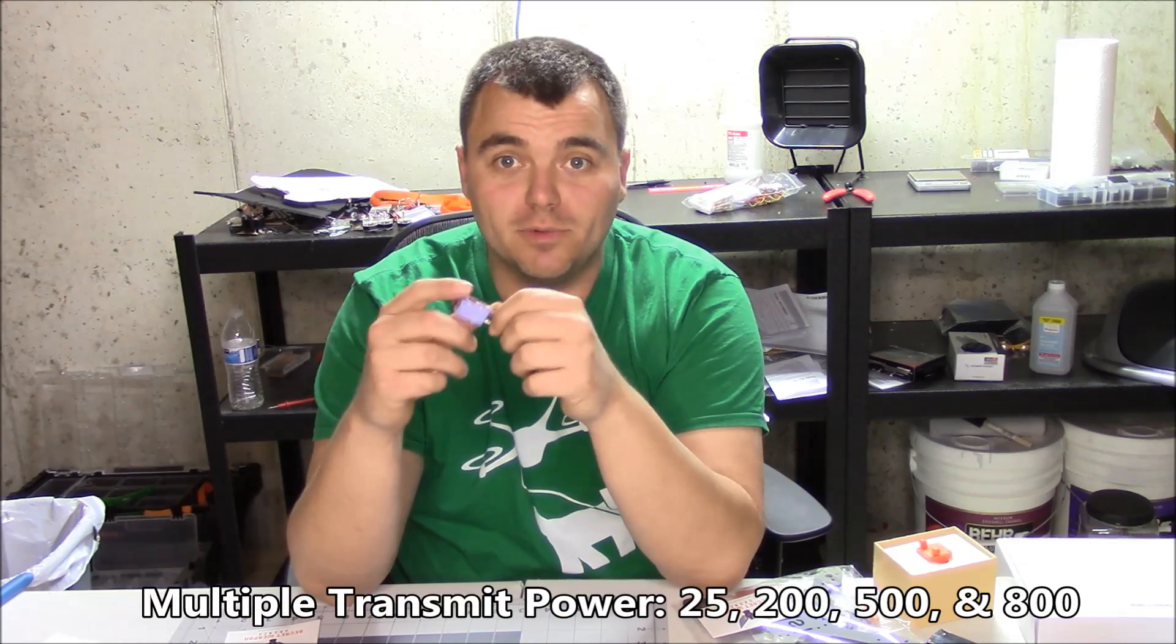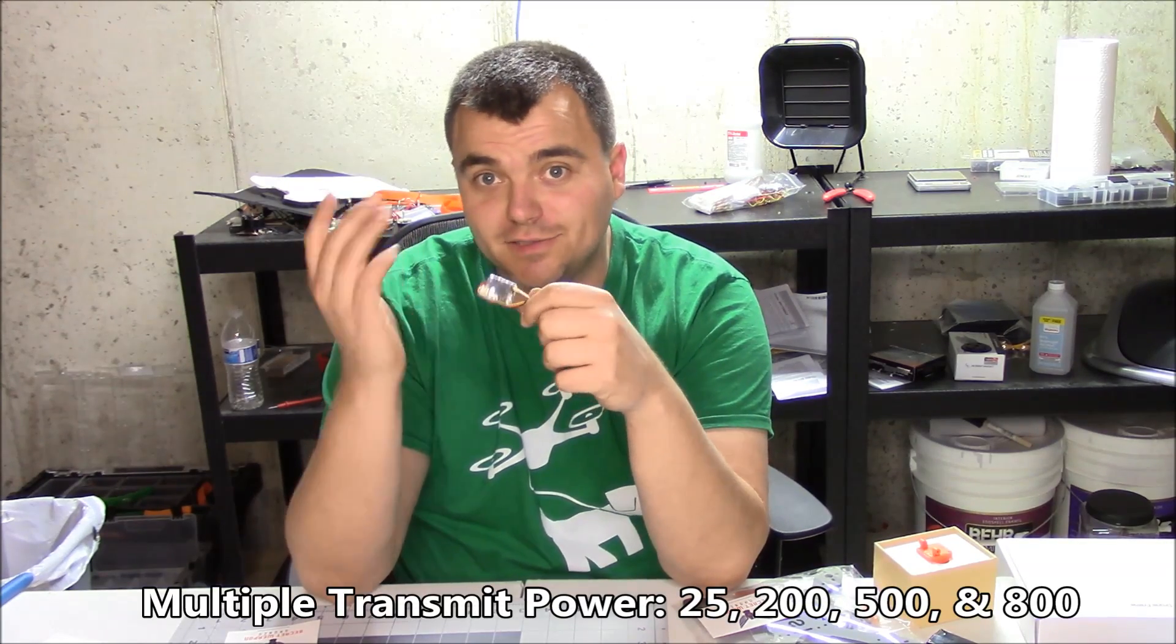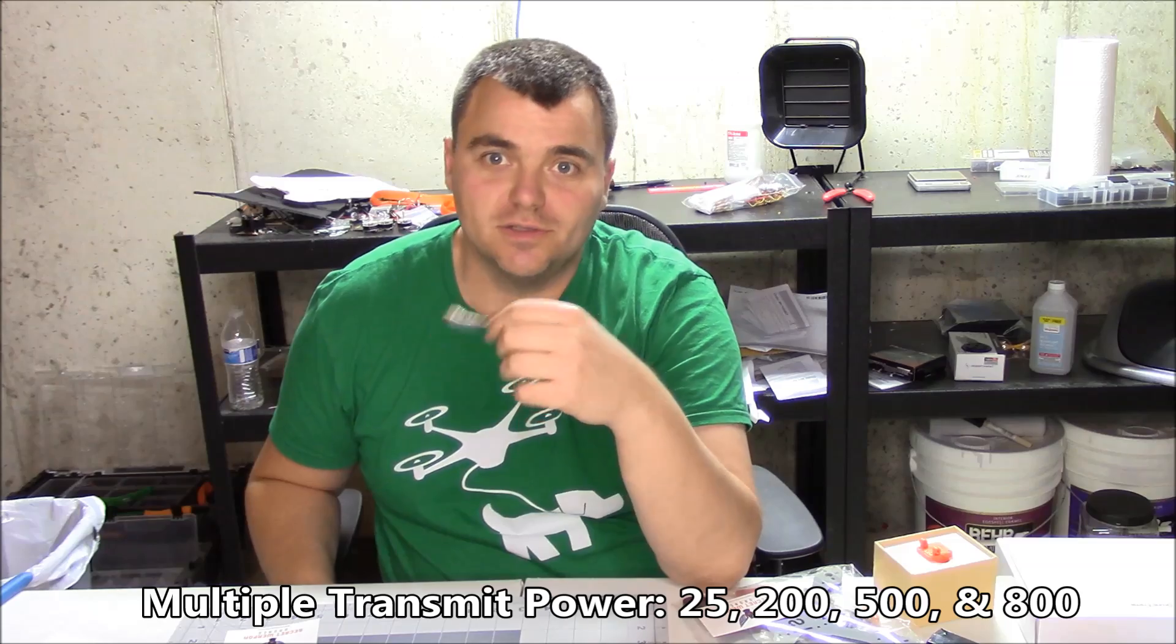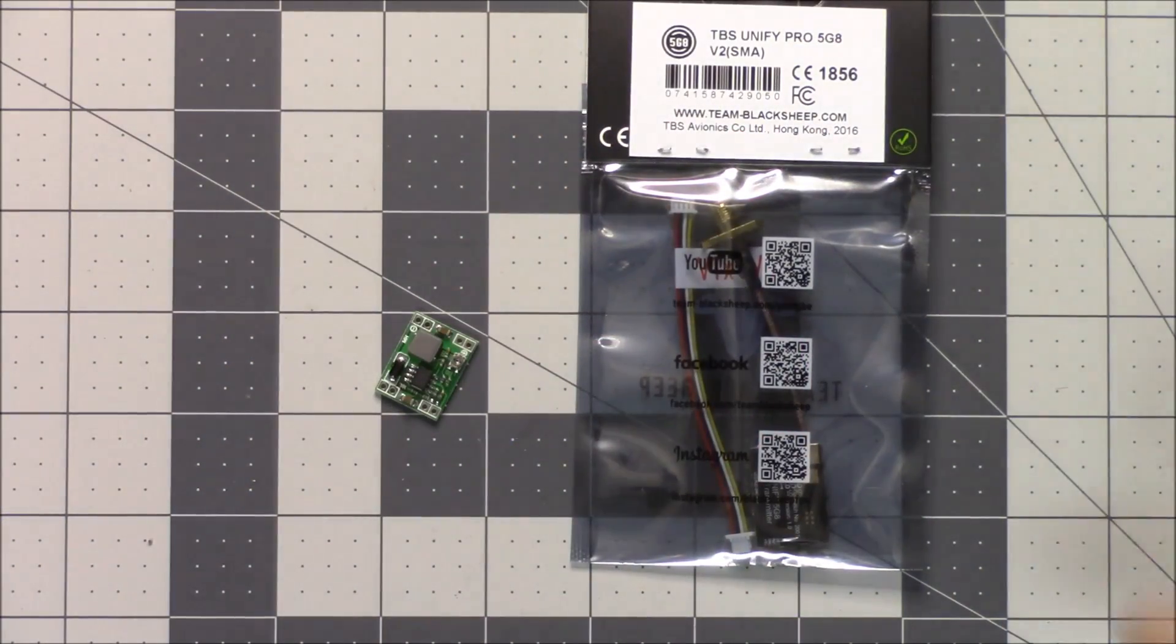It has multiple power output so you can have your race quad that's only allowed 25 milliwatts on the weekend when you're flying, and you can fly it for acro and have one VTX on there and fly at 800 milliwatts around buildings and trees in a more RF challenging environment. So I'm gonna show you how to build this.